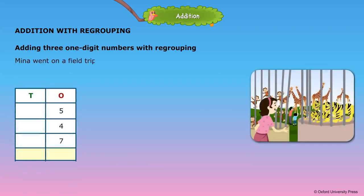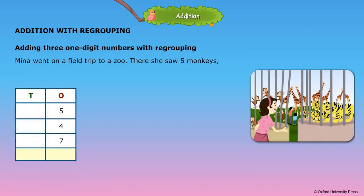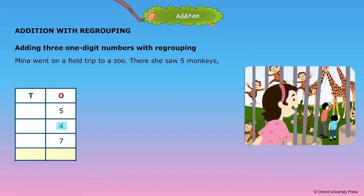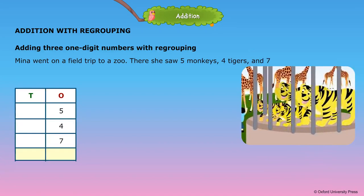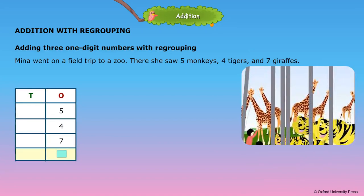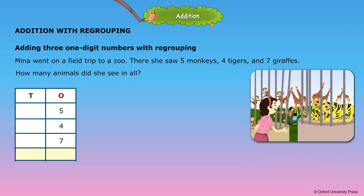Meena went on a field trip to a zoo. There she saw 5 monkeys, 4 tigers, and 7 giraffes. How many animals did she see in all? 5 plus 4 plus 7 is equal to 16. Meena saw 16 animals in all.